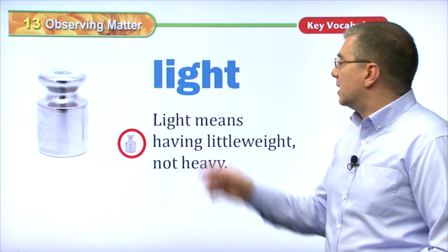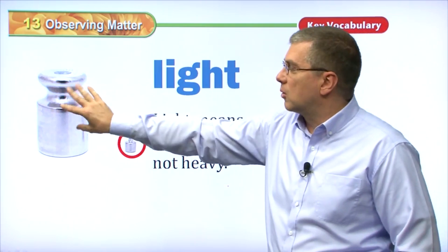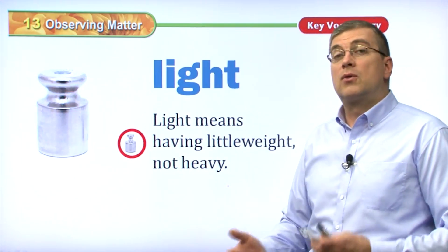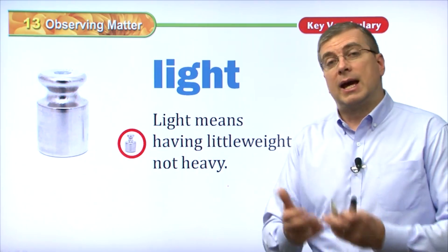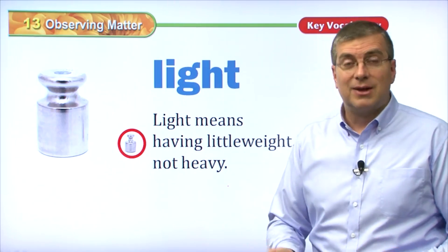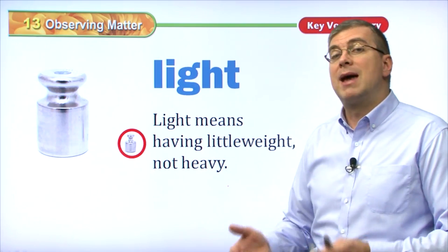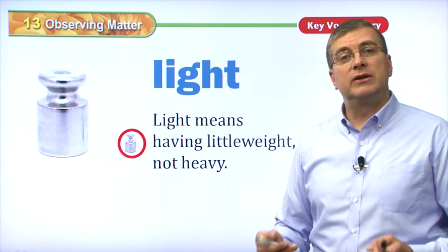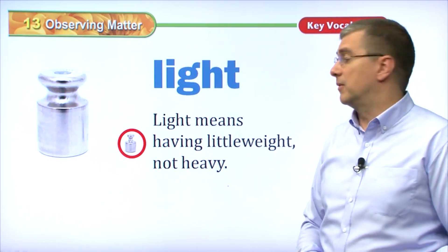And we have light. Light means having little weight — not heavy. So we have a smaller weight here, and it's not as heavy as the previous weight. Different materials have different weights. As I said, metal is very heavy, but a butterfly's wings are very light. So plastic is light, metal is heavy. We have these two different adjectives to describe the features of some type of matter.